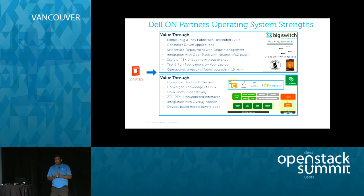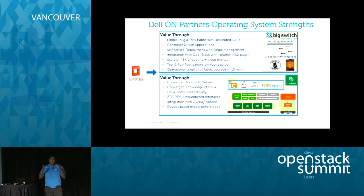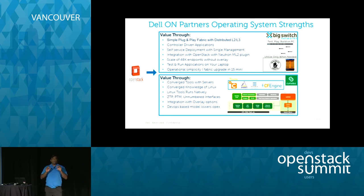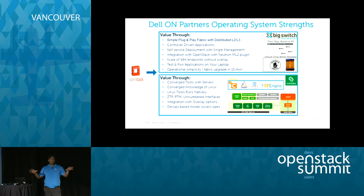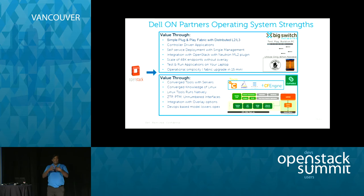Diving deeper into the two partners I'll focus on: Cumulus and Big Switch. Big Switch has a very simple message — it's one big switch. Simple plug-and-play of your fabric: you bring up your switches booting with ONI and the Switch Light OS, put in the controller IP, and after that everything is managed from the controller. That's your supervisor — configuration, management, and troubleshooting all happen from the controller. That's your single pane of management.